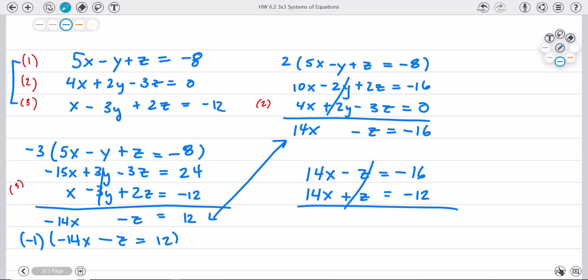The z's cancel. I get twenty eight x equals negative twenty eight. Divide both sides by twenty eight. And I get x equals negative one.